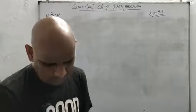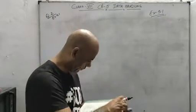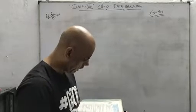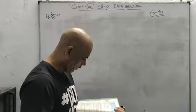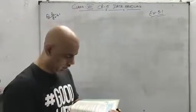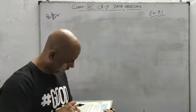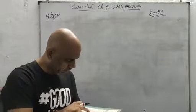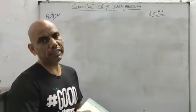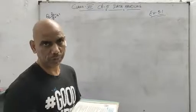Let me write the data for question number 3: the weekly wages of 30 workers in the factory. Using tally marks, make a frequency distribution table with intervals starting 800 to 810. He has told you the interval this time, but if not given you check the minimum and maximum. The minimum wage I can see is 804, and the maximum is 898. So we can make 10 groups of 10 rupees each.